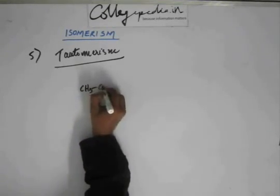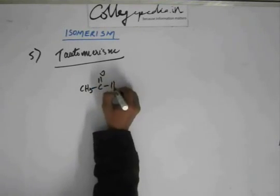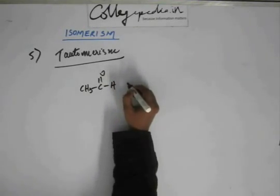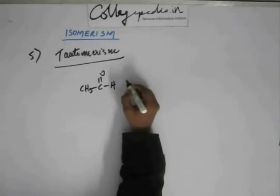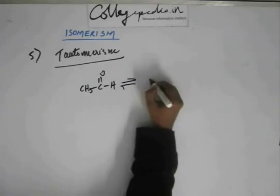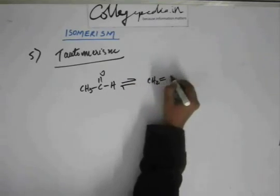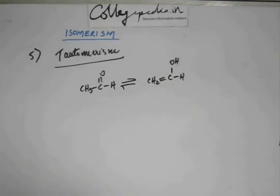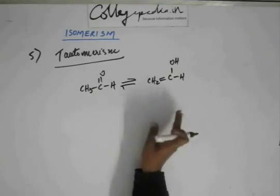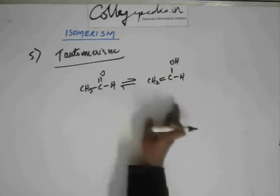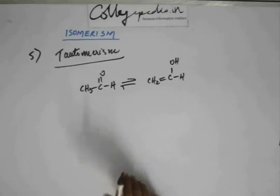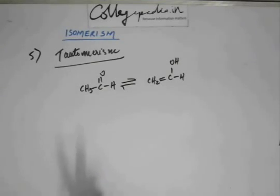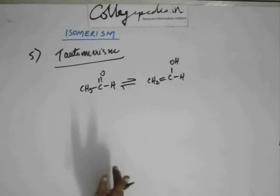As such, it is not isomerism in a real sense, but in books they mention it in isomerism. And they call it as dynamic isomers. Let's see what happens and why they call it as dynamic isomers. First of all, it is dynamic because you cannot isolate them. They will be changing back and forth from one form to another. First of all, they are isomers. How? Because the molecular formula is same. Functional groups are different.